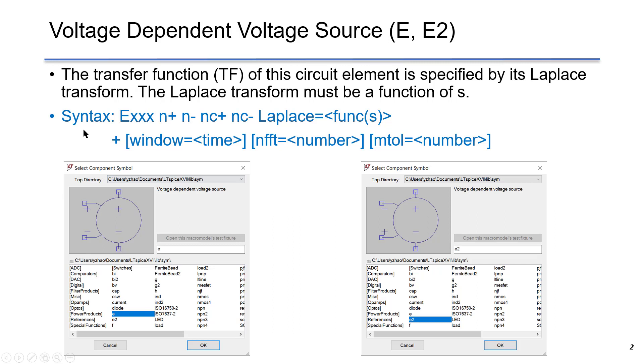The syntax is shown here. We put E source. This is the output node plus, output node minus, control node plus, control node minus, Laplace transform from equations. It is not that important right now because we are using graphical user interface to set up the E source.